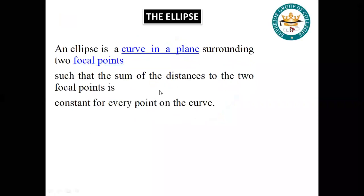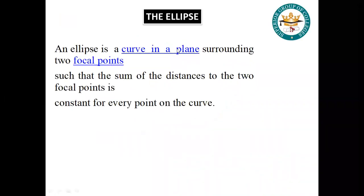You know the elliptical shape, which is called ellipse. What is the proper definition? An ellipse is a curve in a plane surrounding two focal points, meaning fixed points, such that the sum of the distances to the two focal points is constant for every point on the curve.